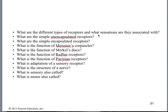So again — what are the different types of receptors and what sensations are they associated with? Meissner's: light touch. Merkel's: found in the epidermis, fine touch. Ruffini: deep, vibration, little to no adaptation. Pacinian: pressure. Adaptation of a sensory receptor means their tolerance goes up and their threshold goes up while their sensitivity goes down.